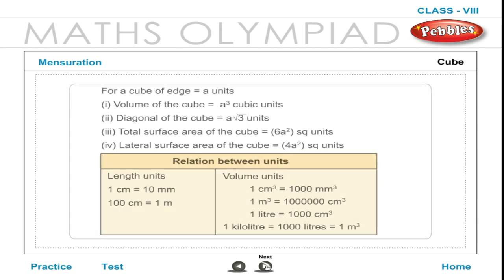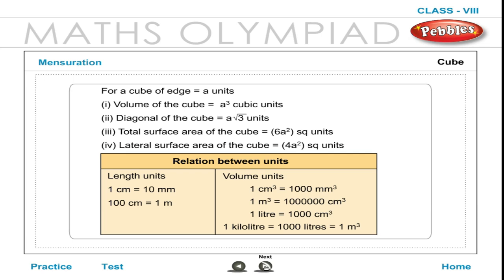Cube: For a cube of edge A units: 1. Volume of the cube = A³ cubic units. 2. Diagonal of the cube = A√3 units. 3. Total surface area of the cube = 6A² square units. 4. Lateral surface area of the cube = 4A² square units.